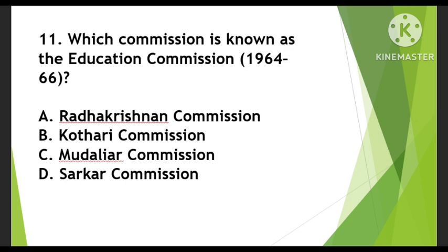Eleventh question: Which commission is known as the Education Commission of 1964-66? Options are Radhakrishnan Commission, Kothari Commission, Mudaliar Commission, or a government commission. The chronological order of commissions is: Radhakrishnan Commission first, then Mudaliar Commission, then Kothari Commission. The Education Commission of 1964-66 is called the Kothari Commission.